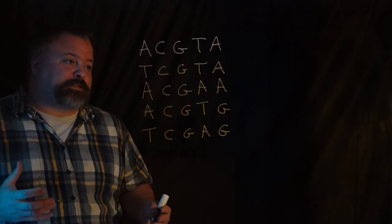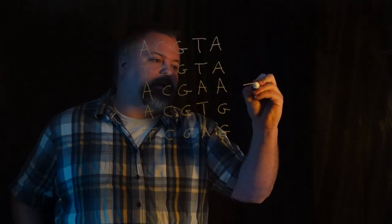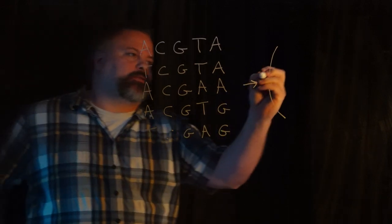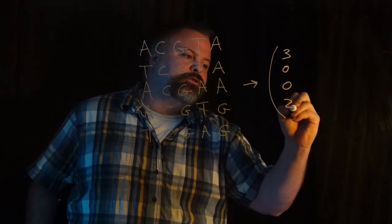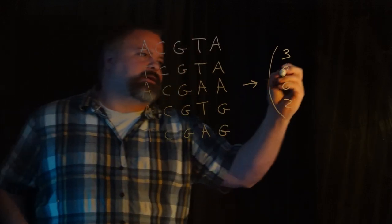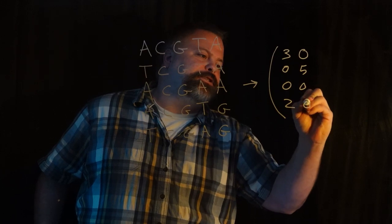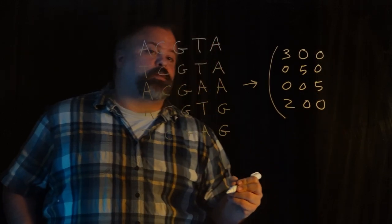For a collection of sequences, our count matrix basically is counting each nucleotide at each position. For example, I have three A's and two T's in the first column. So I'd have three, zero, zero, two. The second and third columns are all C's and G's respectively, and so on.